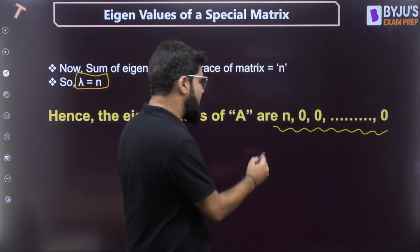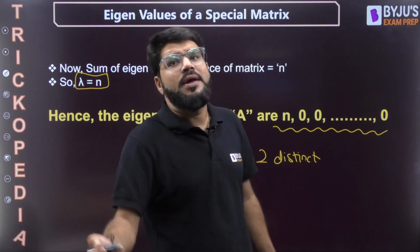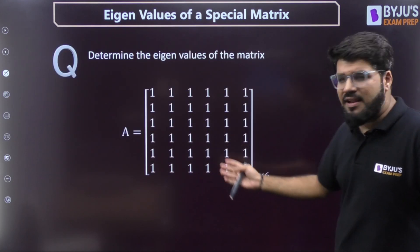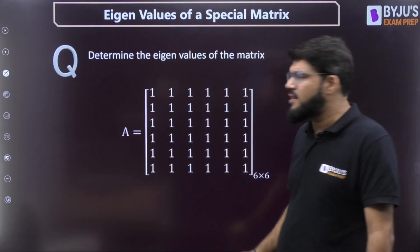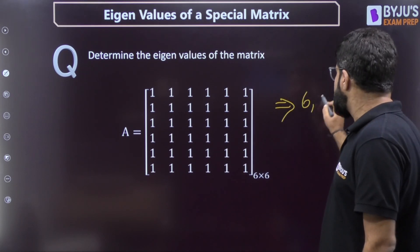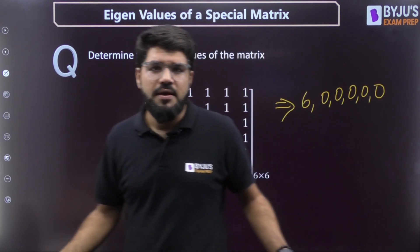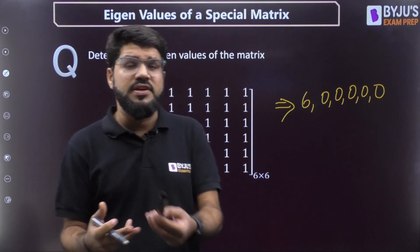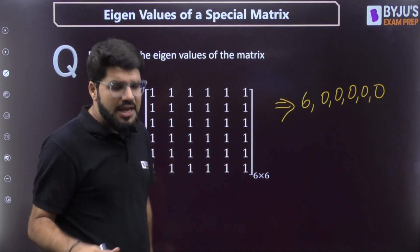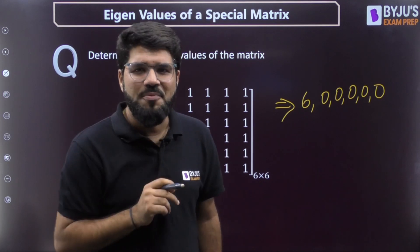So the eigenvalues are n and (n−1) zeros — giving two distinct eigenvalues. For example, for a 6×6 matrix (as shown in the thumbnail), the eigenvalues would be 6 and five zeros. Very simple! If you go through GATE and ESE previous year papers, you will find similar questions about a matrix containing all ones and asking for its eigenvalues.